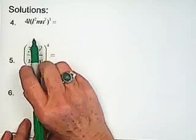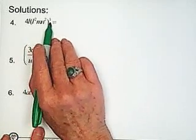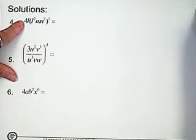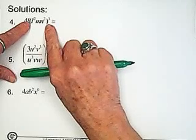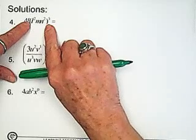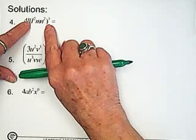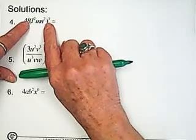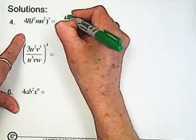Next question. Here we have 4l times l squared mn squared all cubed. Now, it's important to notice that what is cubed is l squared mn squared. So again, remembering BEDMAS, we deal with brackets first. Brackets and then exponents, right? BEDMAS, brackets, exponents, division, multiplication, addition, subtraction. So we'll deal with this piece first. We're going to leave 4 and l by itself.